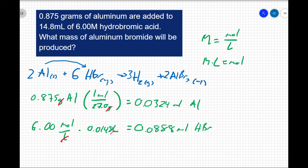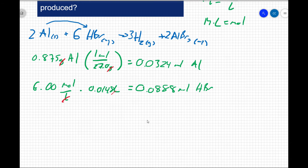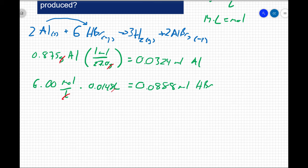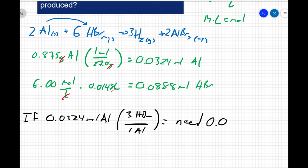The first step, balanced equation. Second step, we've converted to moles. I have information about both reactants, so now I need to find my limiting reactant. I'm going to do an if-then statement. I'm going to say if I have 0.0324 moles of aluminum, then I have a 6 to 2 ratio between my reactants. So I have 6 HBr for every 2 aluminums. I can actually simplify that. I can say 3 HBr for every 1 aluminum. So that means I'm going to need 0.0972 moles of HBr.